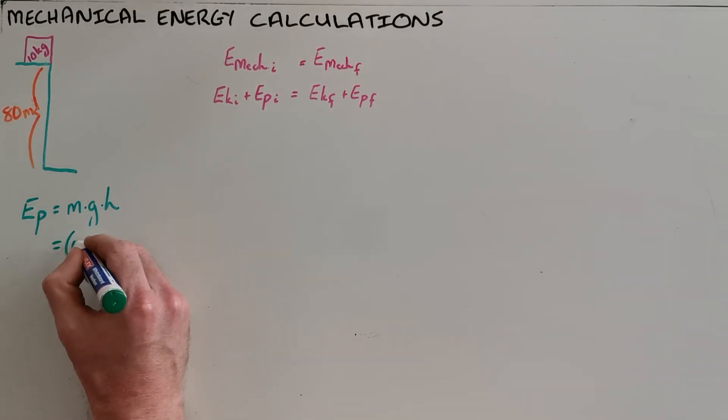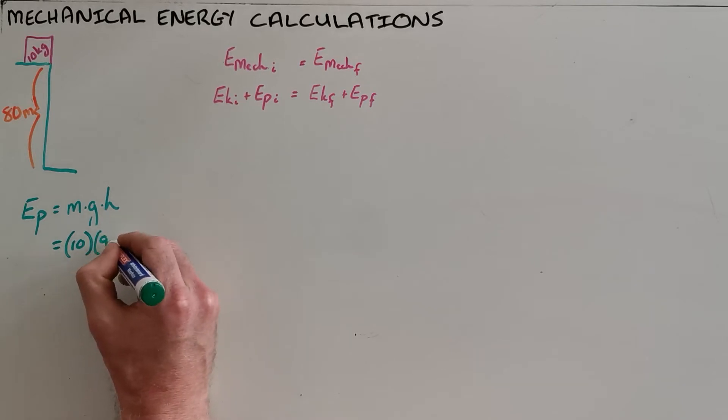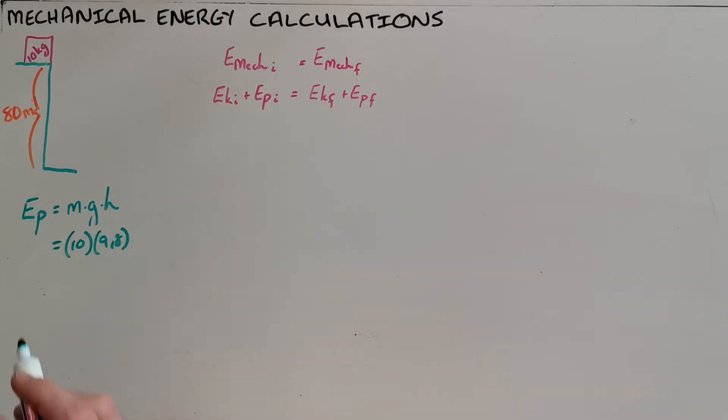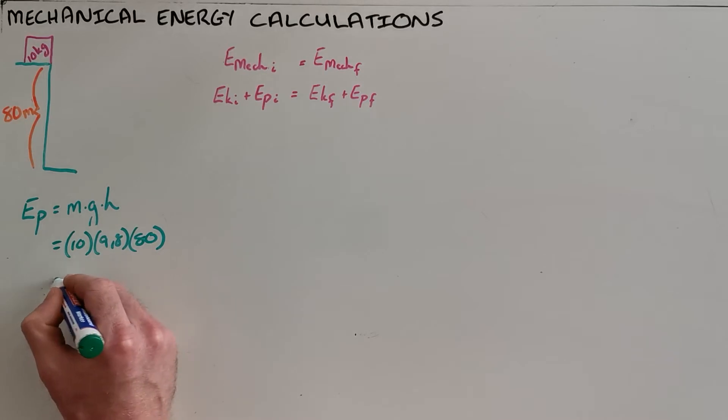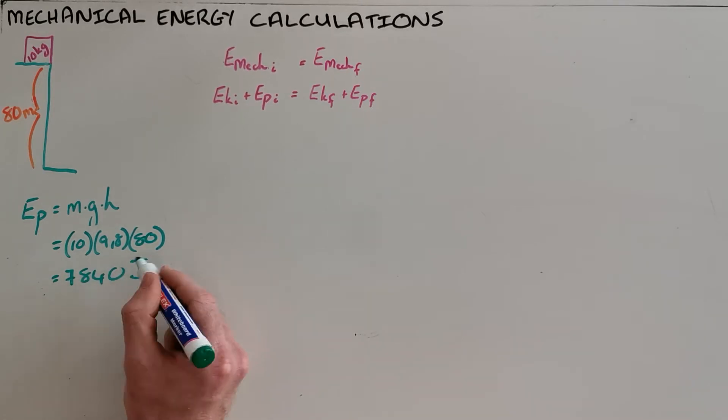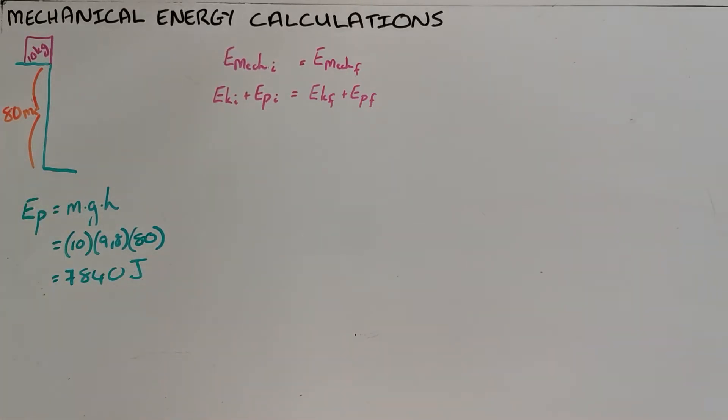We can calculate its potential energy by seeing that that is the product of the object's mass in kilograms, the earth's gravitational acceleration constant, and the object's height above the surface or above the ground measured in meters. In this case that object is 80 meters off the ground.